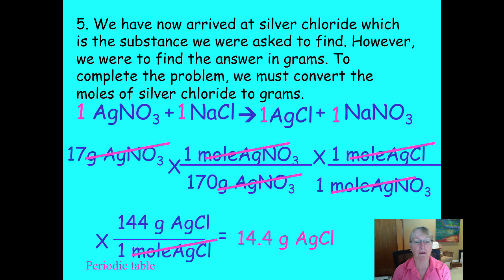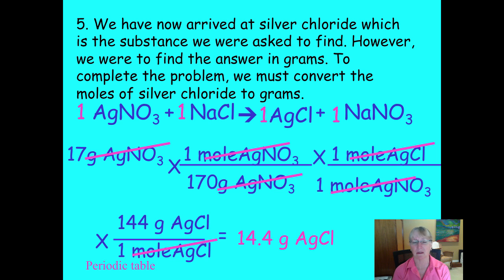The answer comes out to 14.4 grams of silver chloride, because we had one tenth of a mole. Notice three significant figures are shown — technically the given value should have been written as 17.0 grams of silver nitrate to justify three sig figs.